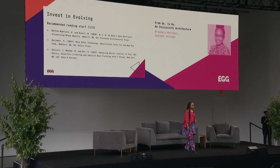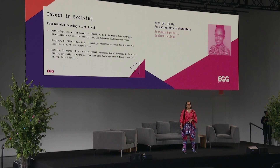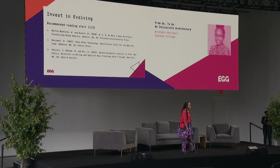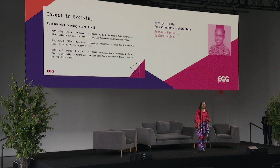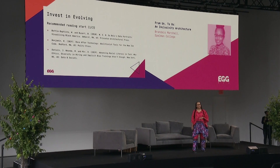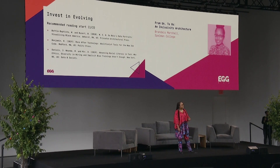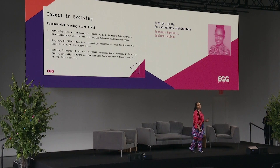Second is Ruha Benjamin's Race After Technology. This book is on pre-order — I'm still waiting for mine. It is really talking about the new Jim Code and looking at how technology and race are intermingled, and how certain types of tech can be very racialized and how that might be perpetuated.